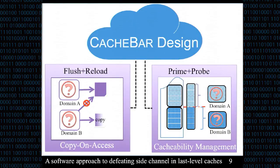To provide full protection against both Flush+Reload and Prime+Probe attacks, we propose a design called CacheBars, which includes two mechanisms: copy-on-access and cacheability management. Our CacheBars design is focused on the cloud environment and enhances isolation between different security domains. These domains can be a process, a VM, or a container.